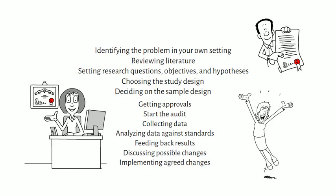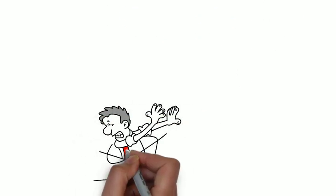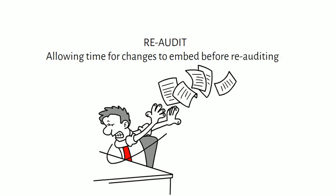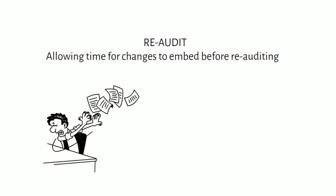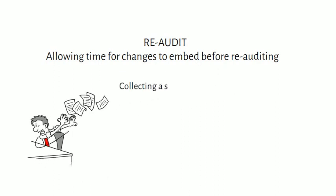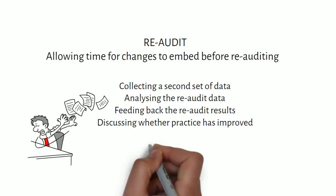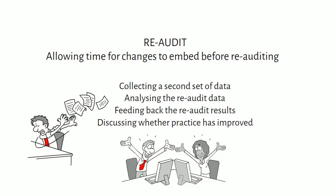Sometimes you may plan to do a re-audit to review the changes and improve them further. For this, you need some time for the changes to embed before the re-audit — this may be six months or a year depending upon the agreement between administration and the departments. You then develop your proposal again, get it approved, collect the second set of data, analyze the re-audit data, and feed back the re-audit results.